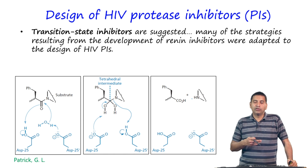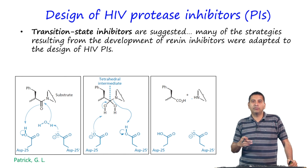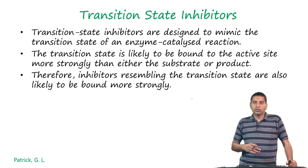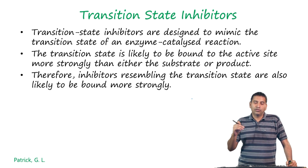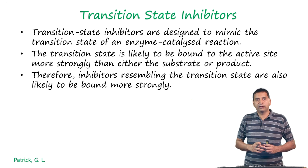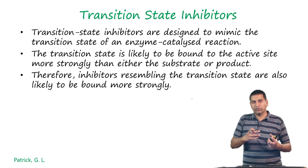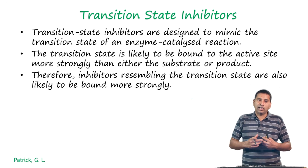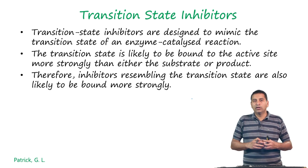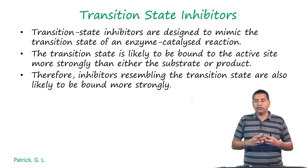Based on this mechanism, transition state inhibitors can be used. Many strategies previously used for renin inhibitors can be adapted for the design of HIV protease inhibitors. Transition state inhibitors are designed to mimic the transition state of the enzyme-catalyzed reaction — if the inhibitor resembles the transition state, the enzyme binds to it significantly more strongly compared to the substrate or product, resulting in competition with the natural substrate. Therefore, inhibitors resembling the transition state are quite actively sought after.